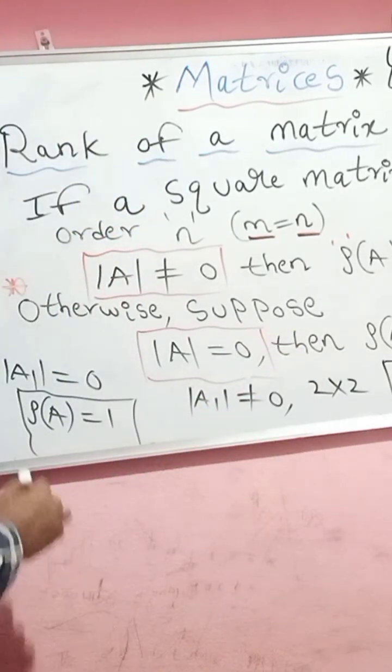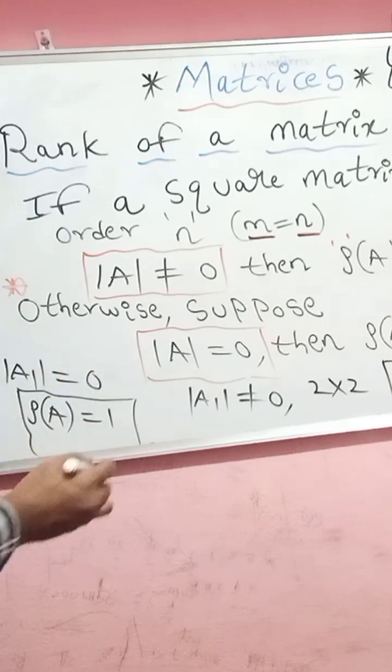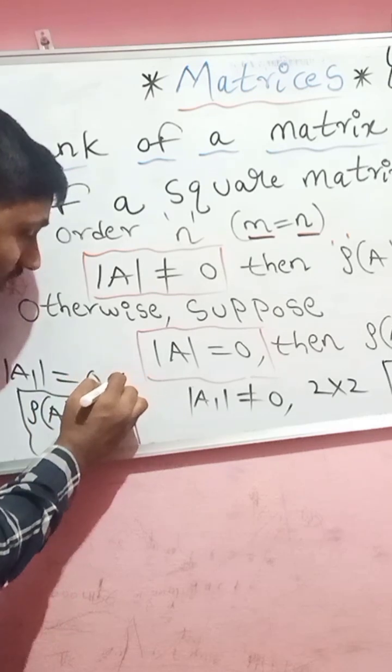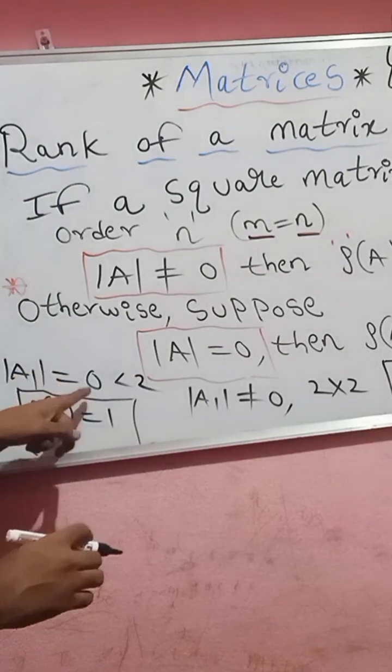So one more case: det A1 is 0. Determinant of square sub-matrix is 0. Then rank should be less than 2. Rank less than 2, only in the case det A1 is 0.